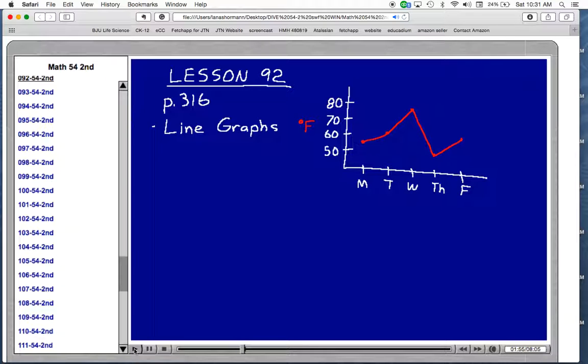And that's easy for us to look at. And we can kind of see a pattern there. We can see where the highest temperature was, where the lowest temperature was. We could find out an average temperature for the week as well from that information. Why don't we use the line graph that's on page 316 and let's do some practice problems using that line graph.